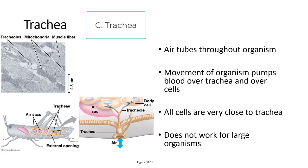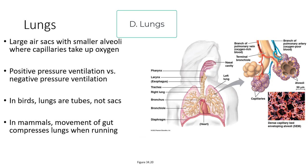Arthropods, especially land-dwelling arthropods, use trachea — air tubes that are throughout the organism, very small, going down to every single cell. Movement of the organism pumps the hemolymph and moves gas sacs to pump air in and out. As the organism moves faster, not only does the blood pump faster, but the trachea move air faster. As respiratory demand goes up — as this grasshopper hops around — so too does the movement of the hemolymph and gas. This doesn't work well for large organisms because of the distance air must travel, making lungs much more efficient.